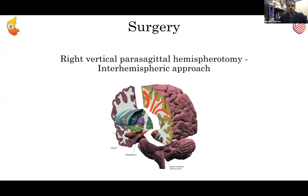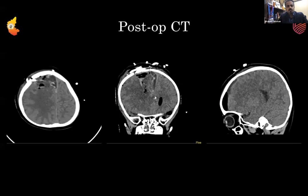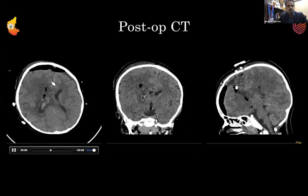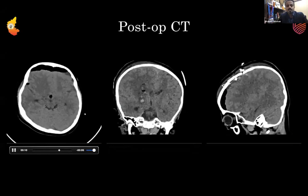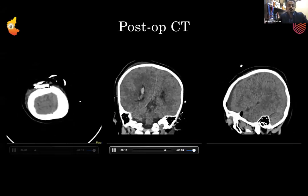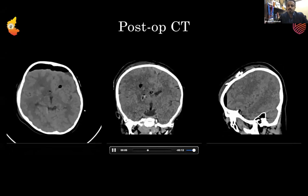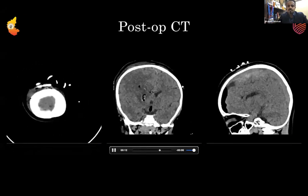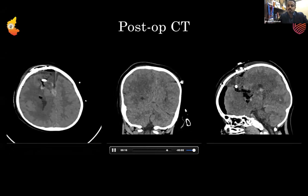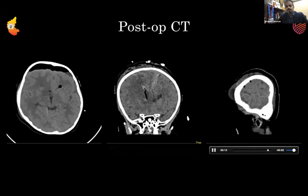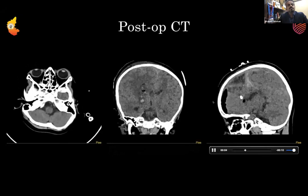The surgery performed was right vertical parasagittal hemispherotomy using the interhemispheric approach. Many centers still use the perisylvian technique of hemispherotomy, which is equally efficient with good outcomes; we followed this particular technique. On the post-operative CT, axial sections show clear anterior, middle, and posterior disconnections — the three broad steps of the surgery. The disconnection line in the middle extends from the body of the lateral ventricle down to the temporal horn, indicating complete disconnection. A major part of the surgery is total callosotomy from genu to splenium, which is critical to avoid seizure recurrence in hemispherotomies.